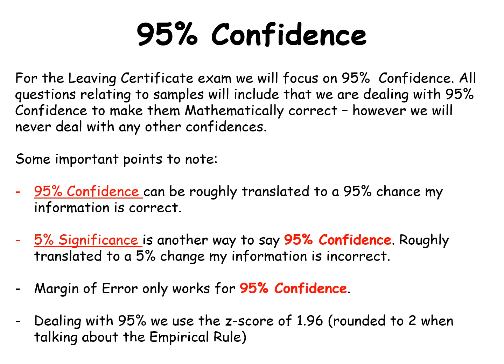The margin of error that we looked at only works for 95% confidence. And dealing with 95% we use a Z score of 1.96, which we would talk about as rounding to 2 with regards to the empirical rule. But we are a lot more accurate now, we're actually going to 1.96.